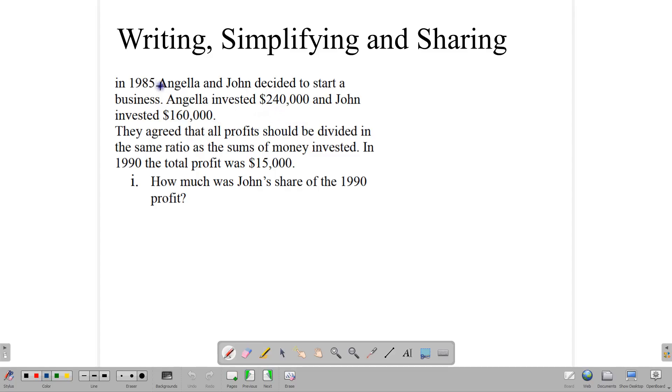Angela and John decided to start a business. Angela invested $240,000, and John invested $160,000. This is a model that comes up in POB all the time, where they talk about partnerships and how to share profits. The company made $15,000, and they're deciding how much should John's share of the profit be. Let's write down something. We have Angela, and then we have John.